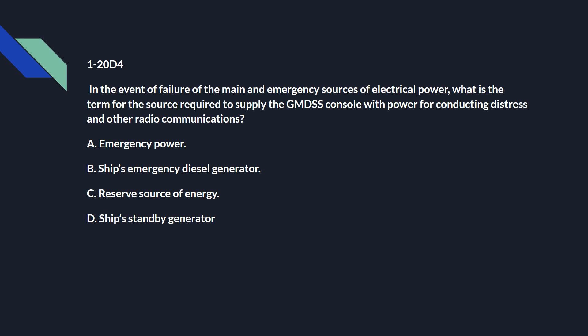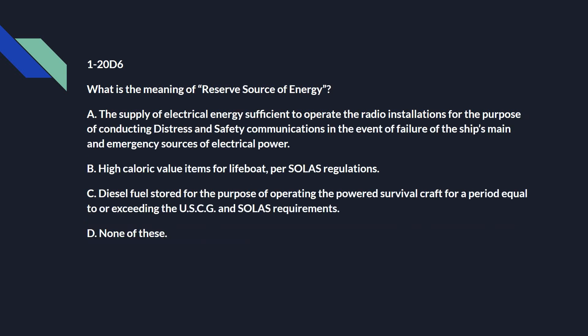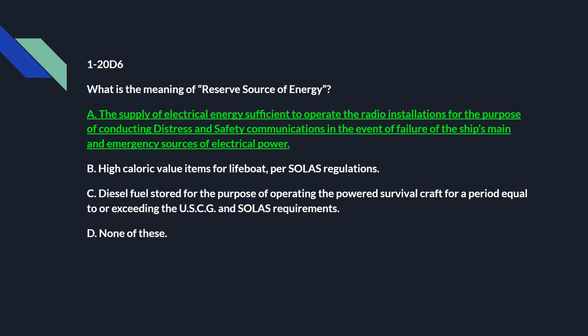1-20 Delta 4: In the event of failure of the main and emergency sources of electrical power, what is the term for the source required to supply the GMDSS console with power for conducting distress and other communications? That is C: reserve source of energy. 1-20 Delta 6: What is the meaning of reserve source of energy? Answer is A: the supply of electrical energy sufficient to operate the radio installations for the purpose of conducting distress and safety communications in the event of failure of the ship's main and emergency sources of electrical power.